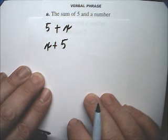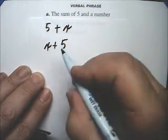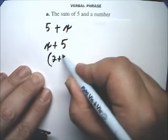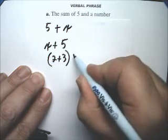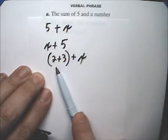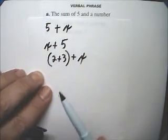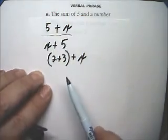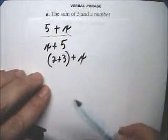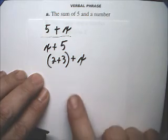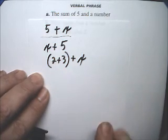And let's see if I can think of some other way. I got it, here. There, that's the sum of 5 and a number, so this first answer is the way most people would write it, but these are also different, and this one is kind of a stretch, but it is the sum of 5 and a number.